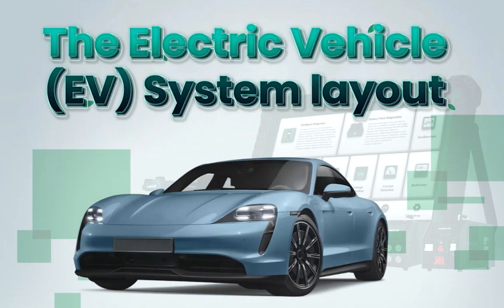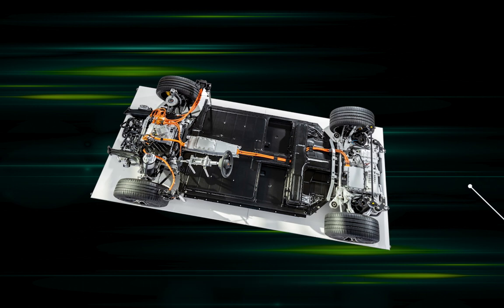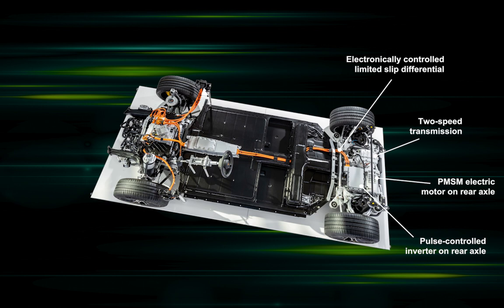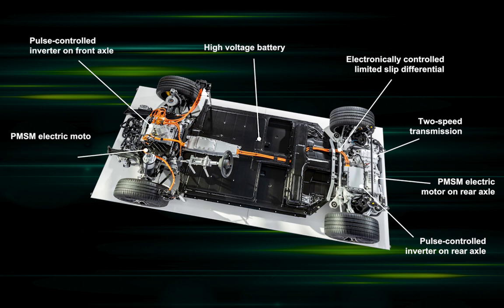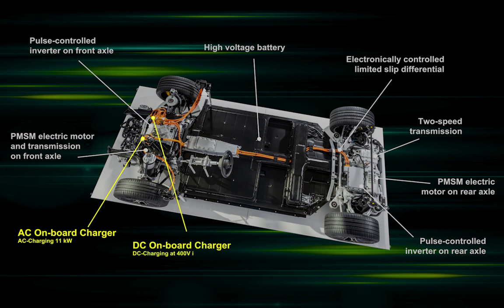The electric vehicle (EV) system layout. The EV system consists of a pulse-controlled inverter on the rear axle, electric motor on the rear axle, two-speed transmission, electronically controlled limited slip differential, high-voltage battery, pulse-controlled inverter on the front axle, electric motor and transmission on the front axle, AC on-board charger, DC on-board charger, and charging interface.